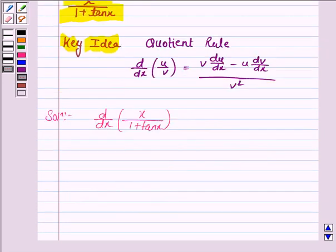Here we will be using the quotient rule. Here u is x and v is 1 plus tan x. So applying the quotient rule,